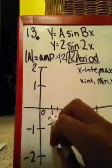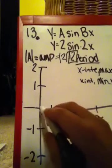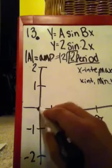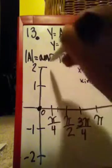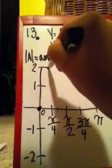So, our first point is our x-intercept, which is just 0. Our maximum point is 2 because that's our amplitude.